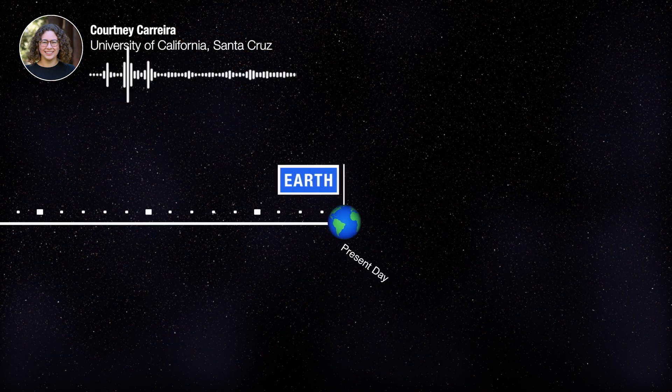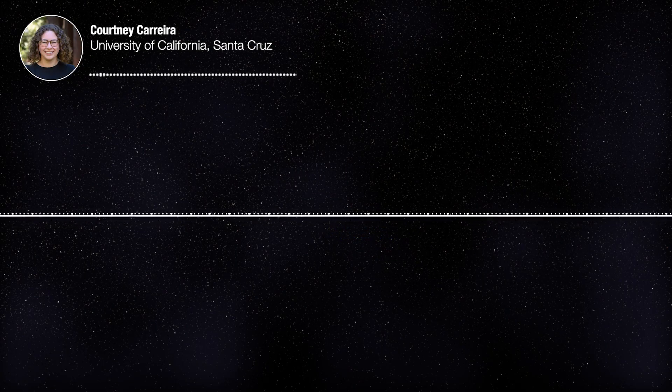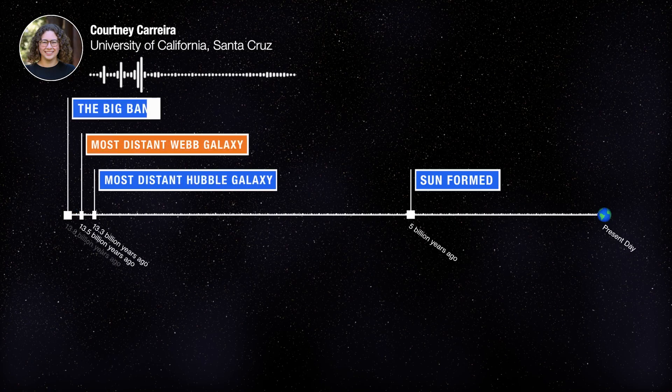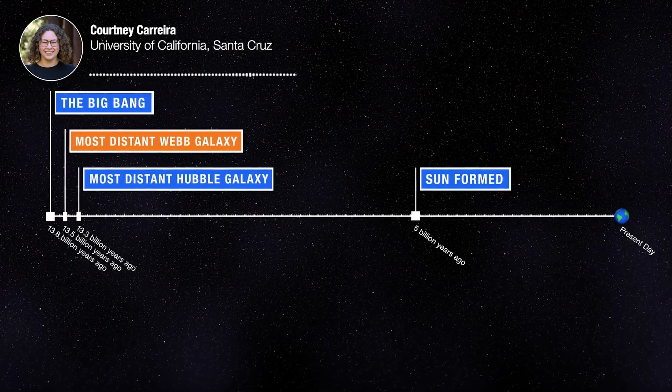And so we're going further and further into the past over time. Now we can see galaxies, and we can observe them, and we can actually analyze them. And that frontier has been pushed forward exclusively by Webb.